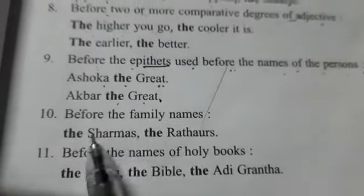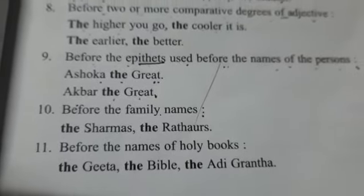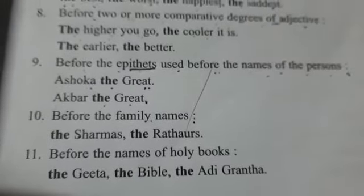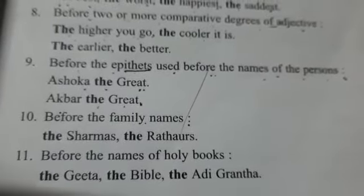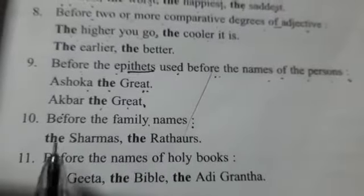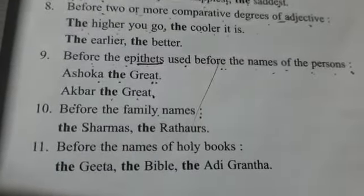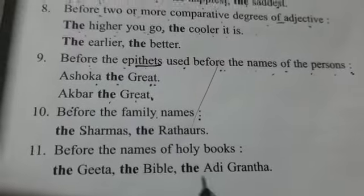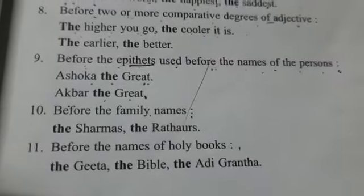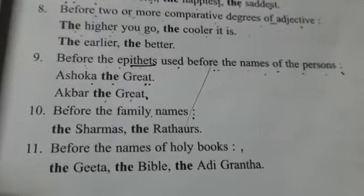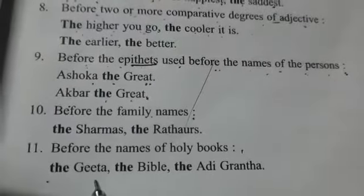Then, before the family names — jo family names hoti hain, like Sharmas, Aroras, or any other. We will use 'the' before them also. Then, before the names of holy books — holy books jo hummare granth hain. Like the Geeta, the Bible.